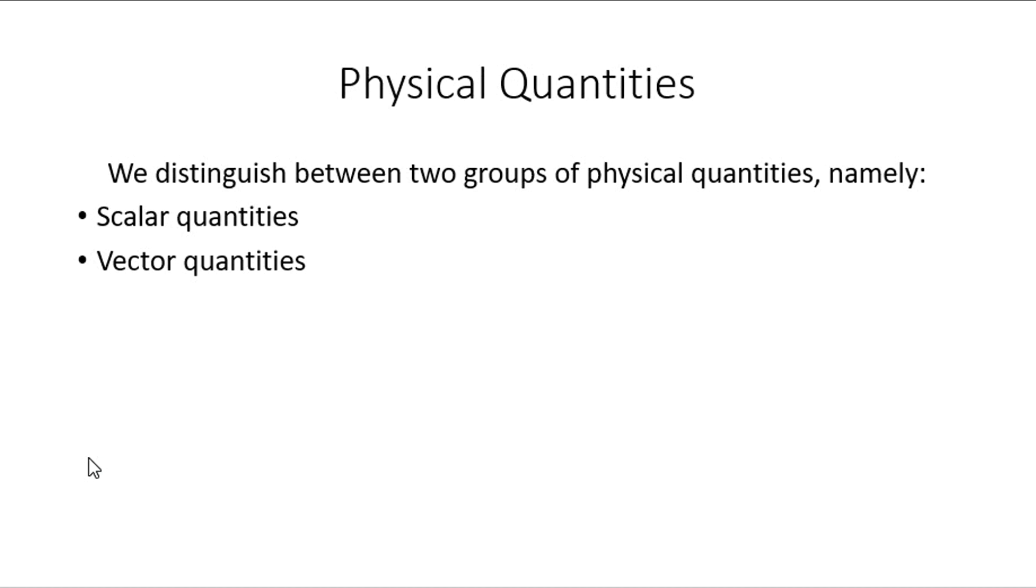Physical quantities. We distinguish between two groups of physical quantities, namely scalar and vector quantities. We have scalar, and then all the way over here, we have vector.